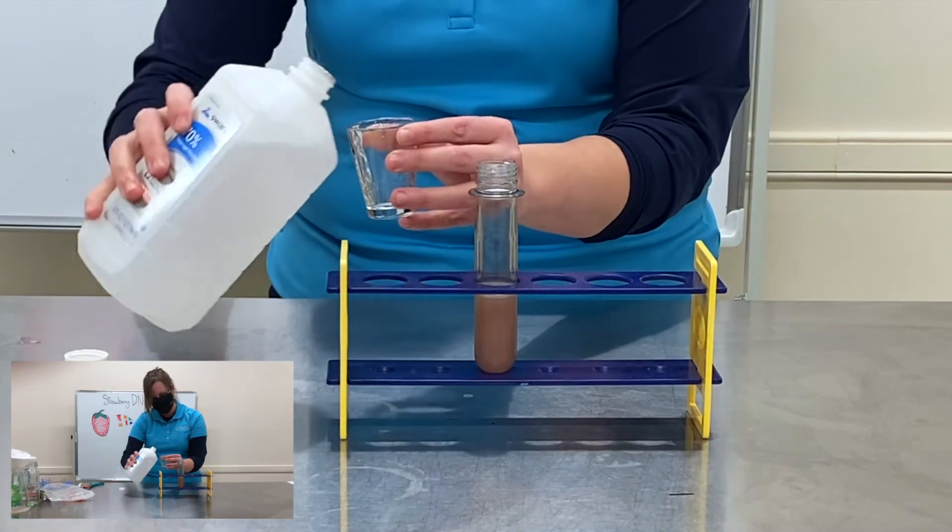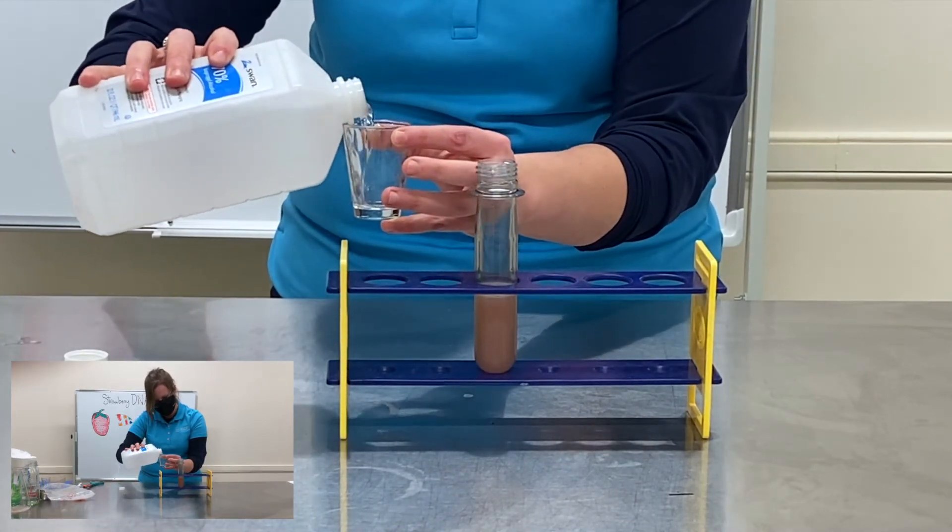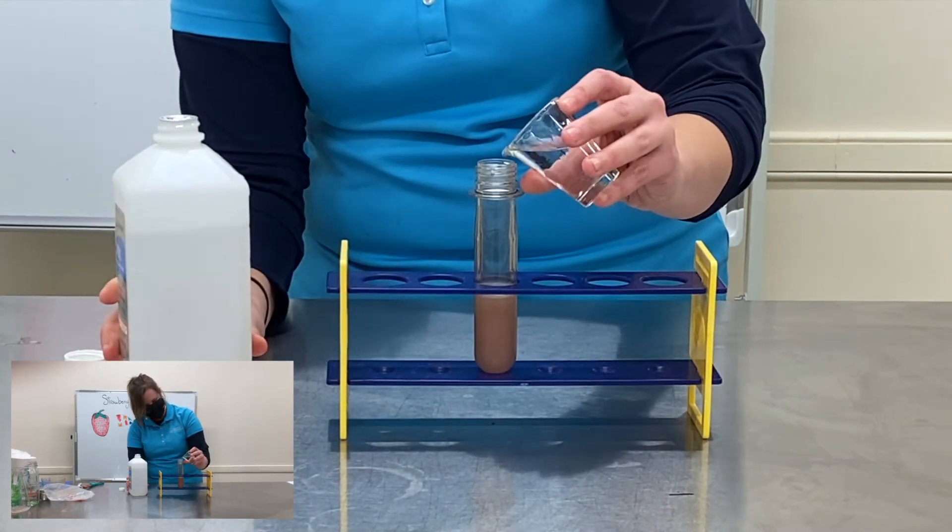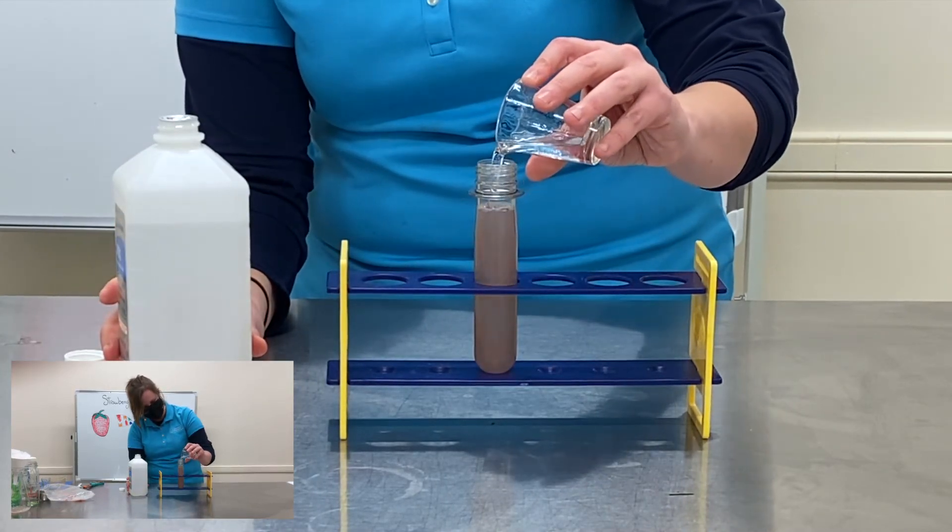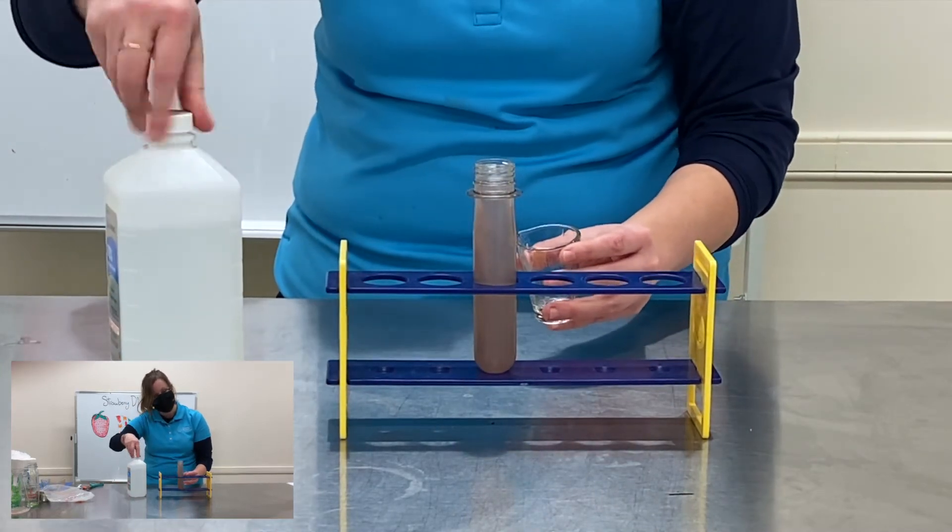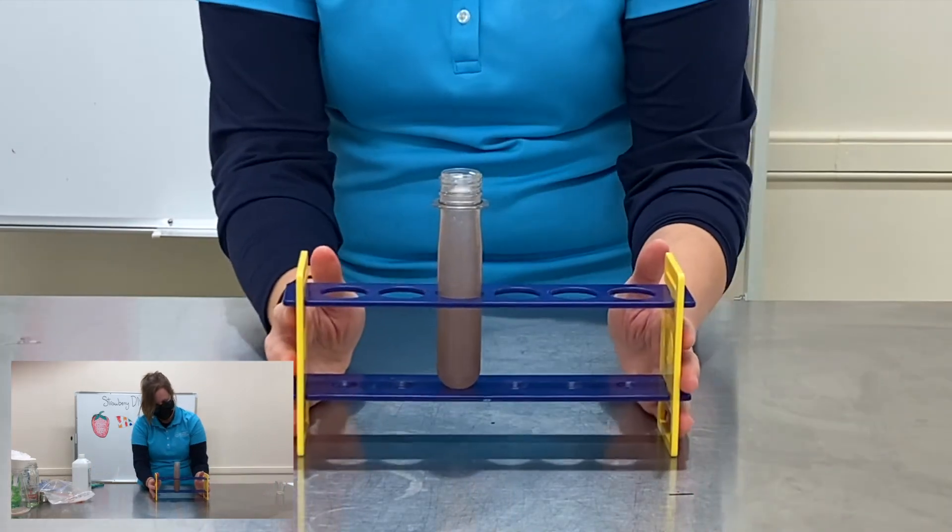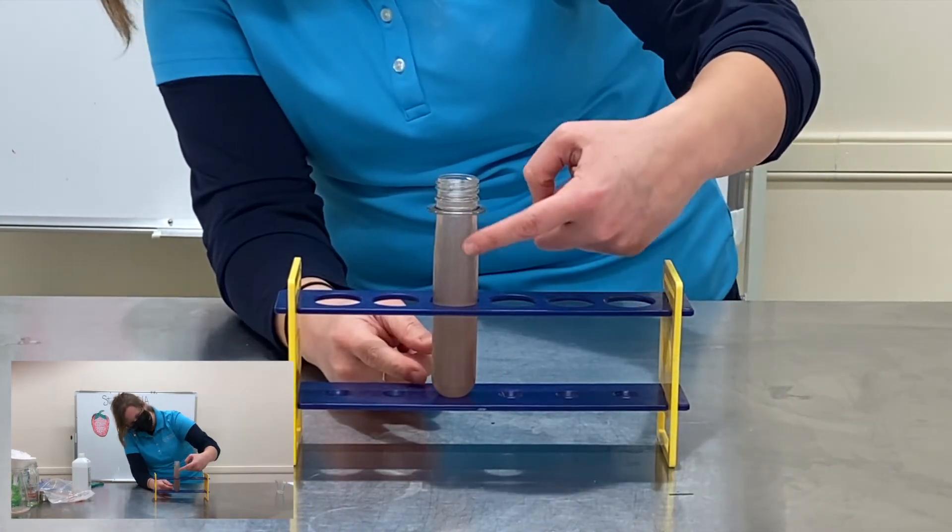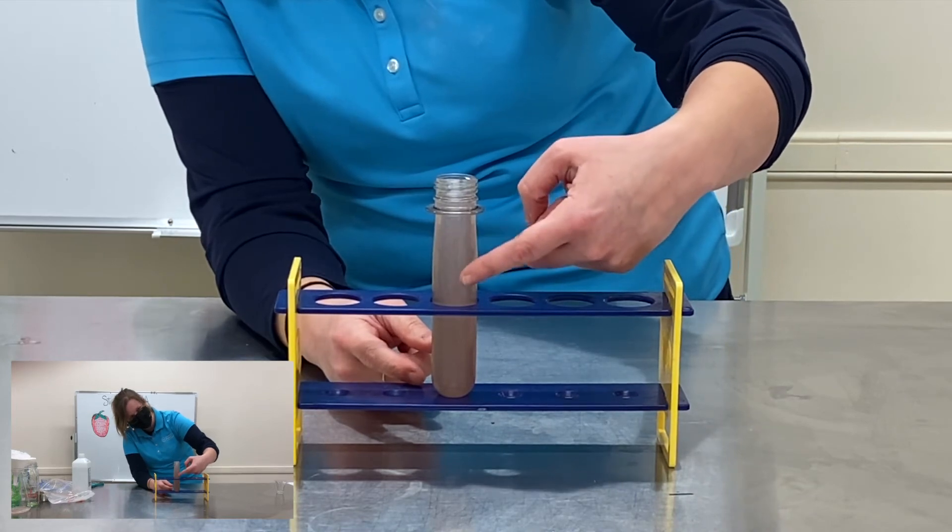So once again I'm opening my cold alcohol. I'm pouring it into my measuring device, adding it to that strawberry soap solution. And I'm just about at the top so I'm gonna stop pouring. I have my strawberry solution right here at the bottom, a layer of the alcohol on top.